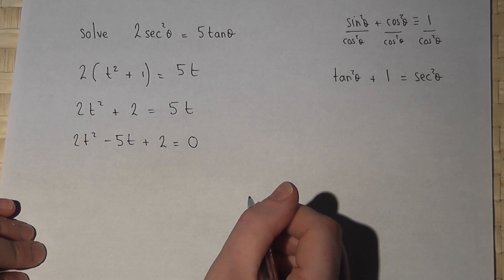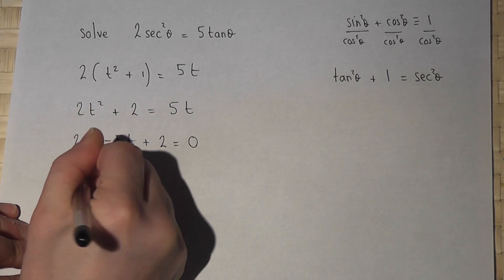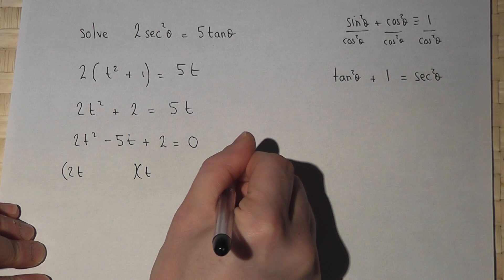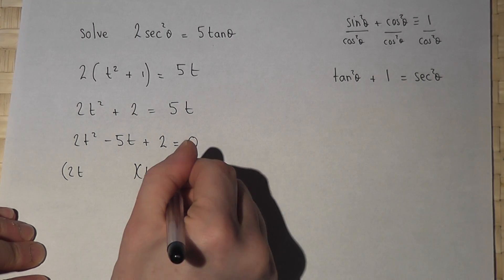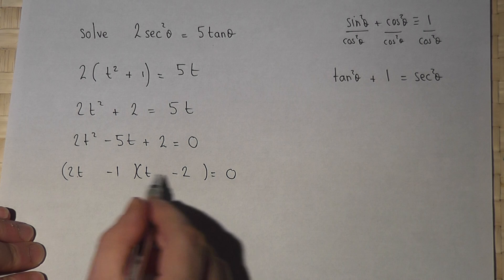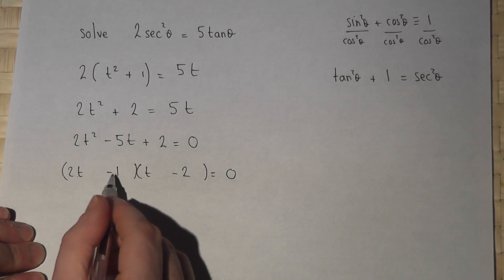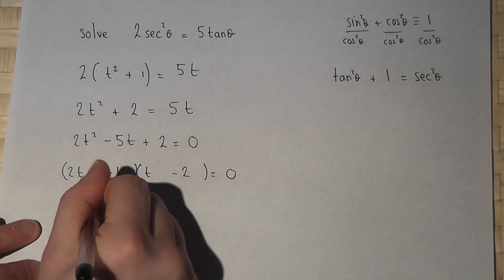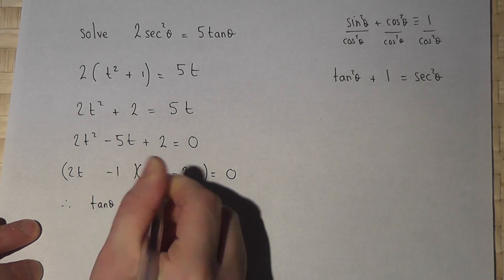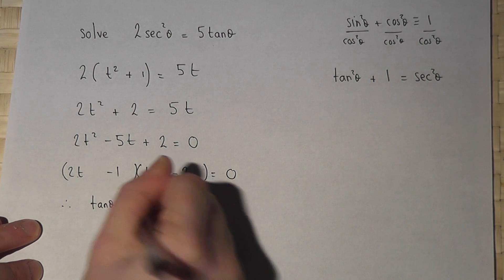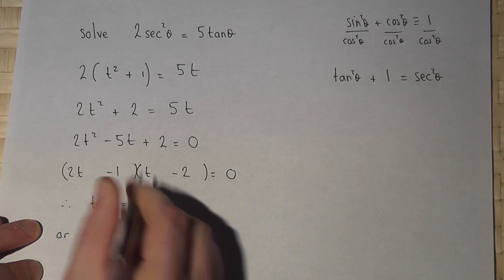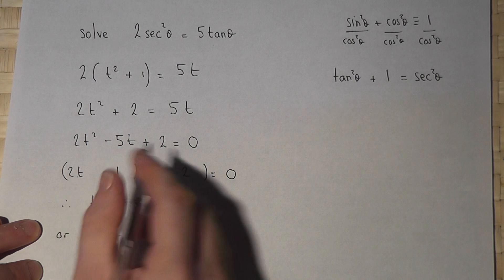This then factorizes to 2t and t. I need a minus 2 and a minus 1. 2 times minus 2 is minus 4, take away t is minus 5t. Therefore, either tan theta equals 2, or tan theta equals 1 over 2.